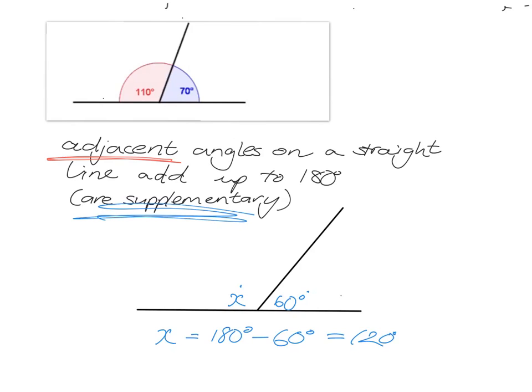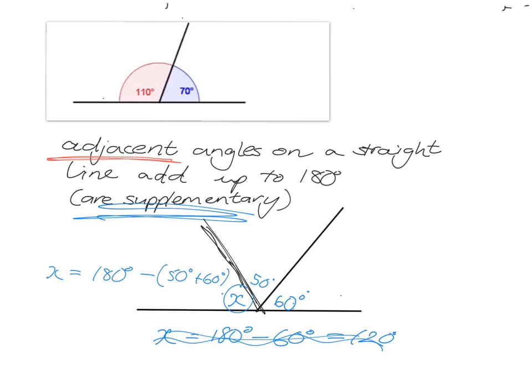It can get a little more complicated. For example, on a straight line you might have one angle of 60 and another of 50, and you need to find x. In that case, 50 plus 60 plus x all add up to 180, so x equals 180 minus 110, giving x equals 70. So that's our first fact: adjacent angles on a straight line add up to 180. Let's go on to the next fact.